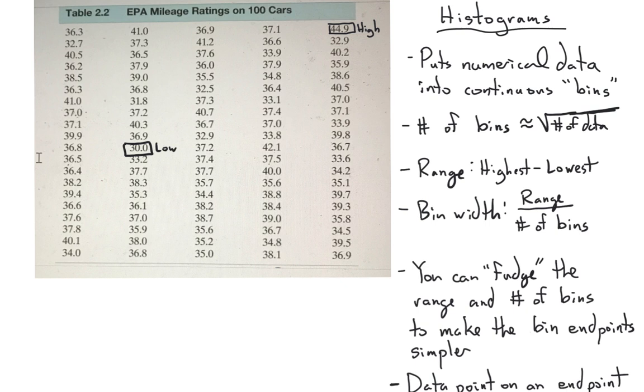When we're putting data into bins, a good question is how many bins do we want? A rule of thumb, and this is a very loose rule you can play around with, around the square root of the number of data points is a good starting point for the number of bins that you want.